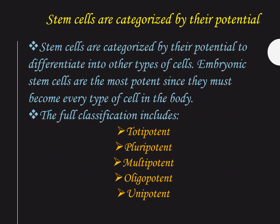Stem cells are categorized by their potency. Embryonic stem cells are the most potent because they can make up any cell in your body. The first type of potency is totipotent — the complete potency — meaning the ability to differentiate into all possible cell types. Examples are the zygote formed by egg fertilization and the first few cells resulting from its division, which are termed totipotent.